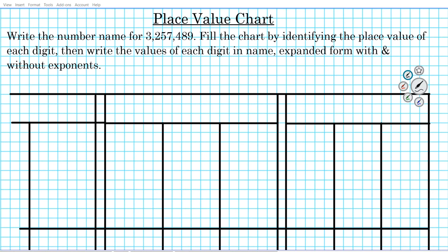The instructions for the problem we're about to do are as follows. We have to write the number name for 3,257,489, and then we have to fill the chart below by identifying the place value of each digit of this number, then write the values of each digit in name and expanded form with and without exponents.